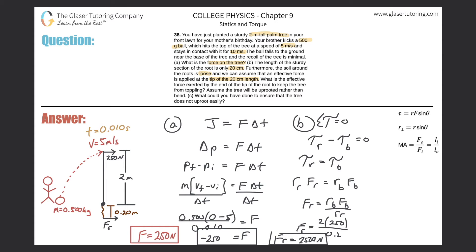Now it asks: what could you have done to ensure the tree does not uproot easily? Option one: since the soil around the roots is loose, you could compress the soil around the base of the tree. By compressing the soil, when the tree starts to rotate it would have to further compress that already-compressed soil, which would be much harder to do. If you've done any landscaping, that should be self-evident.